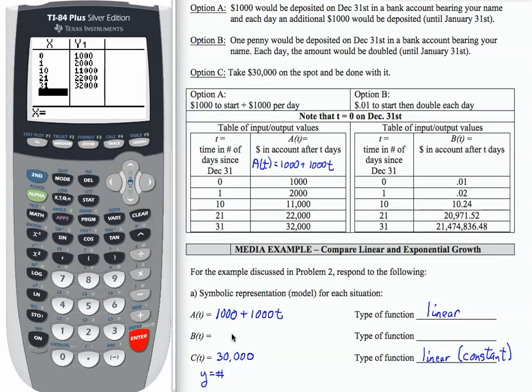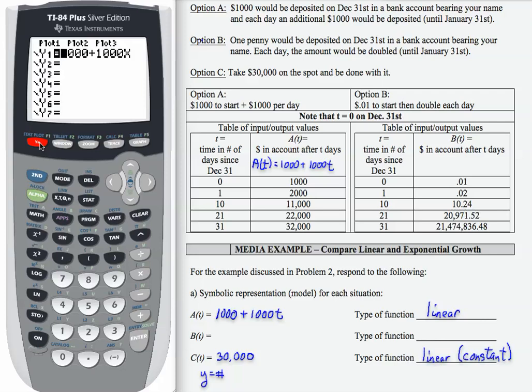Let's jump back to B and let's go back to our Y equals here because we're going to put in another function in just a minute. But let's talk about function B or model B and how we're going to accumulate funds. Much like in option A, we start with an amount. We start with a penny. In option A, to get from output one to output two, I add $1,000. In option B, to get from output one to output two, I multiply by two. So just like I had a thousand times t, I'm going to do two, but I'm going to raise it to the t power.